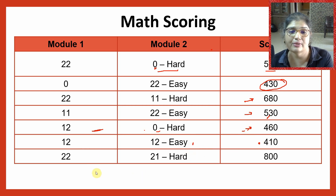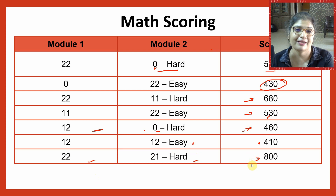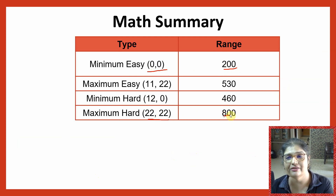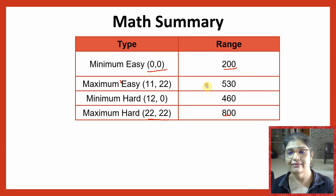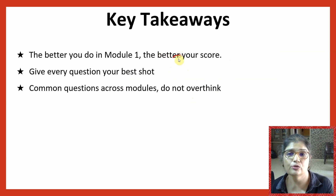There have been cases where with all 22 correct in module one but one or two incorrect in module two, you still get an 800 in math. So the overall math summary is: the minimum you get with an easy module two is 200, the maximum with a hard module two is 800. The maximum you get with an easy module two is 530, and the minimum you get with a hard module two is 460.